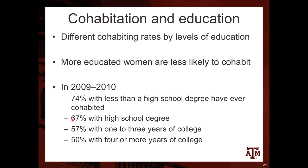In terms of cohabitation and education, there are different cohabitation rates by level of education — more educated women are less likely to cohabit. In 2009–2010, 74% of women with less than a high school degree had ever cohabited, compared to 67% among women with a high school degree, 57% among those with one to three years of college, and 50% among those with four or more years of college. Cohabitation rates decline as education increases.